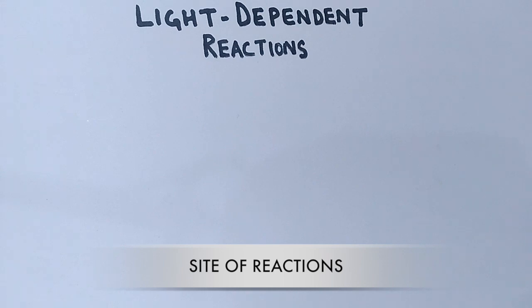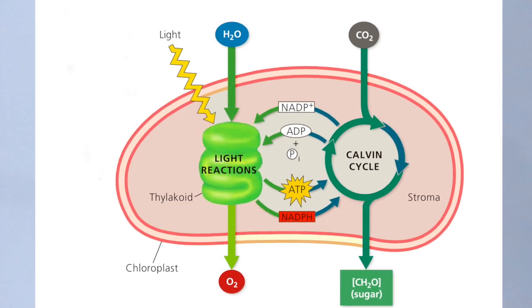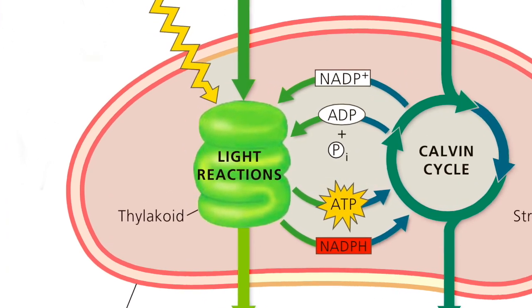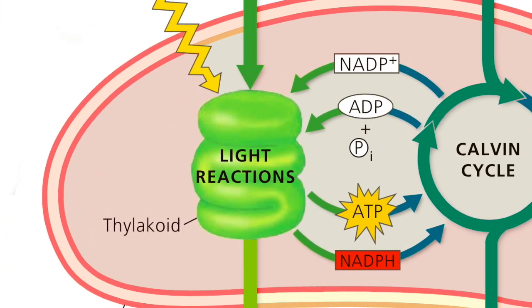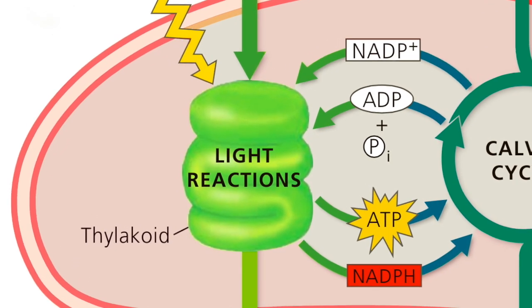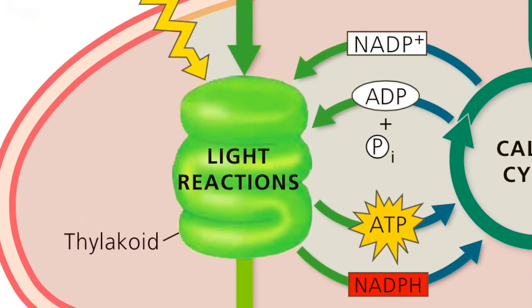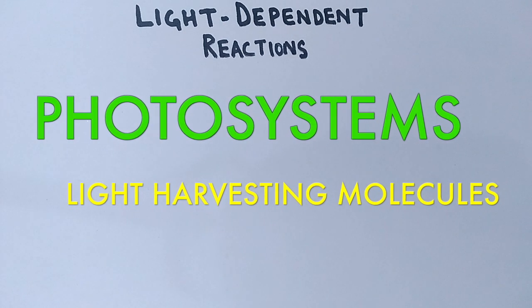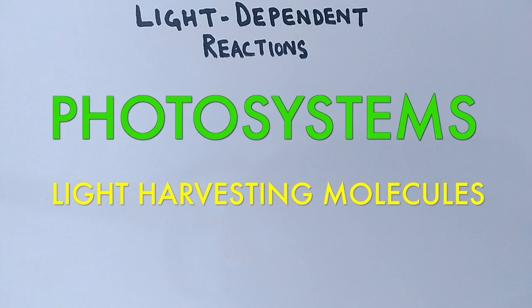It's the type of plastid named chloroplast where photosynthesis occurs, and inside the chloroplast we have double membrane structures called thylakoids. It's in these thylakoid membranes where light-dependent reactions occur. Basically, the membrane of thylakoids are embedded with specialized light-absorbing proteins called photosystems, which makes them the site for these reactions.